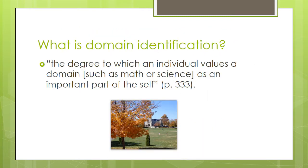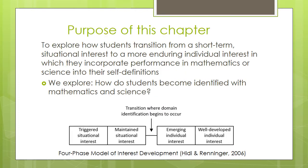First, it's important to understand that domain identification is the degree to which an individual values a domain, such as math or science, as an important part of the self. The purpose of this chapter is to explore how students transition from a short-term situational interest to a more enduring individual interest in which they incorporate performance in math or science into their self-definitions.